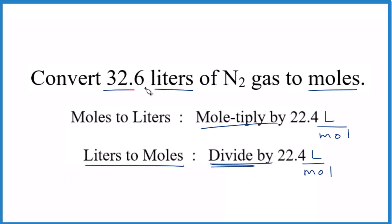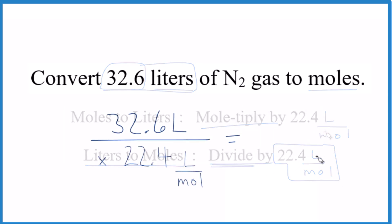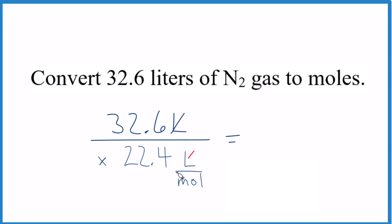We'll take our 32.6 liters here and divide that by 22.4 liters per mole. Let's do it. So when we do this, we have liters here and here.